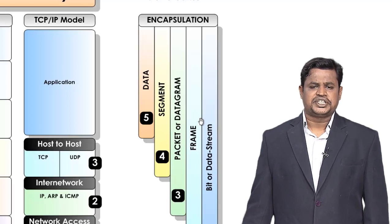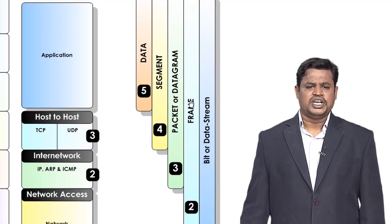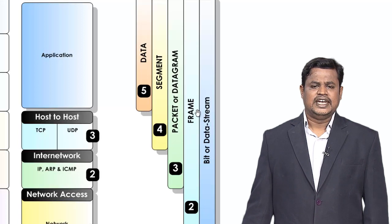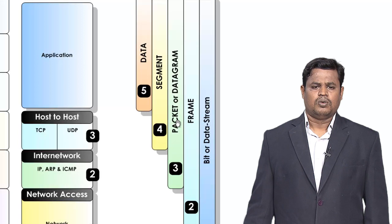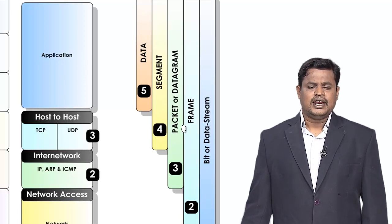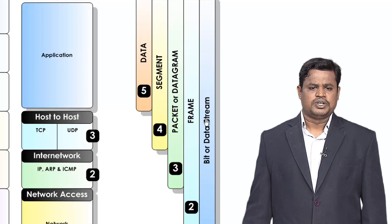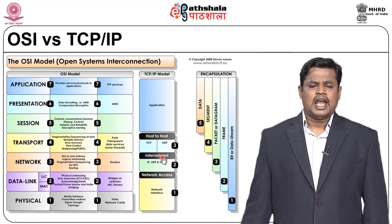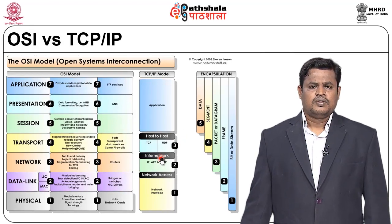All intermediate devices up to the packet level can see and forward the content according to the routing information, then re-encapsulate — adding packet, frame, and bit stream information. This is the normal process of data transmission from source to destination. Whether using FTP, Telnet, SNMP, or web browsing, data flows as segment, IP packet, MAC frame, and finally bit stream.